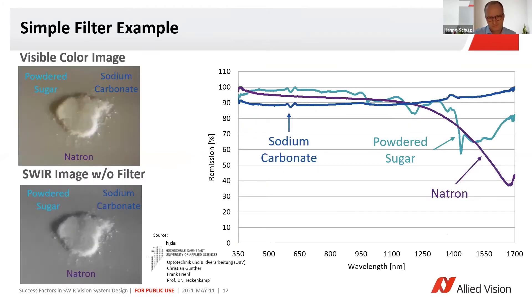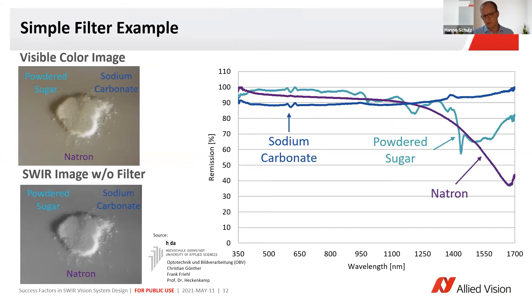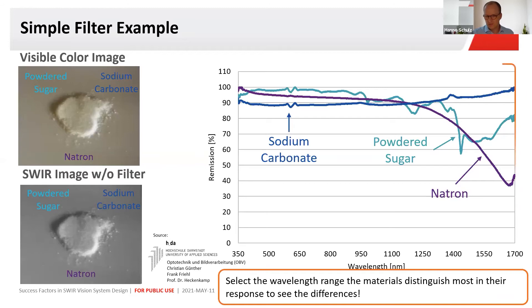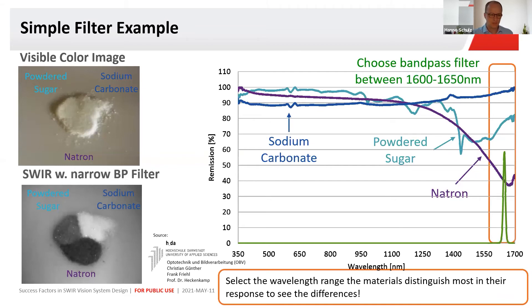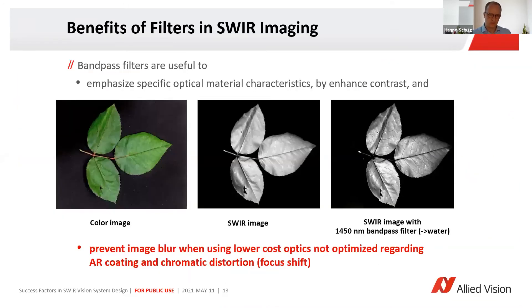Another specific example is this collection of three white substances: powdered sugar, sodium carbonate, and natron. With a standard sphere image in the lower left-hand corner you see no difference, but you can see in a wavelength comparison that at around 1600 to 1650 nanometers they have different characteristics. So if you select a bandpass filter specifically for that area and take the picture again, you see white, black, and gray — so all of a sudden you can clearly identify the different substances.